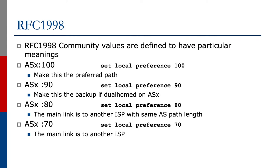The main gist of RFC 1998 is that certain community values were defined to have particular meanings. For example, the AS number followed by community 100 would mean set a local preference of 100, which is the preferred path. Community 90 sets local preference to 90, community 80 sets it to 80, and community 70 sets it to 70.